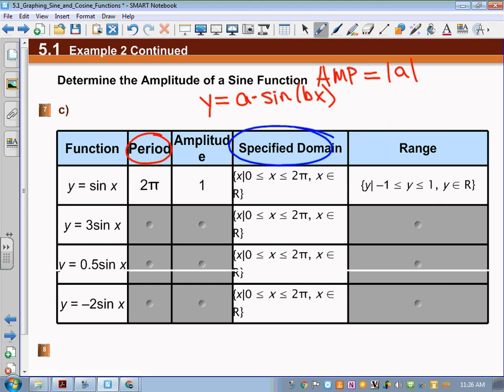Importantly, all four functions have the same period. That hasn't been affected because we're only applying an a value. Here a is 3, here a is 0.5, and here a is -2. But the amplitude is the absolute value of a, so we get 3, 0.5, and 2 respectively.